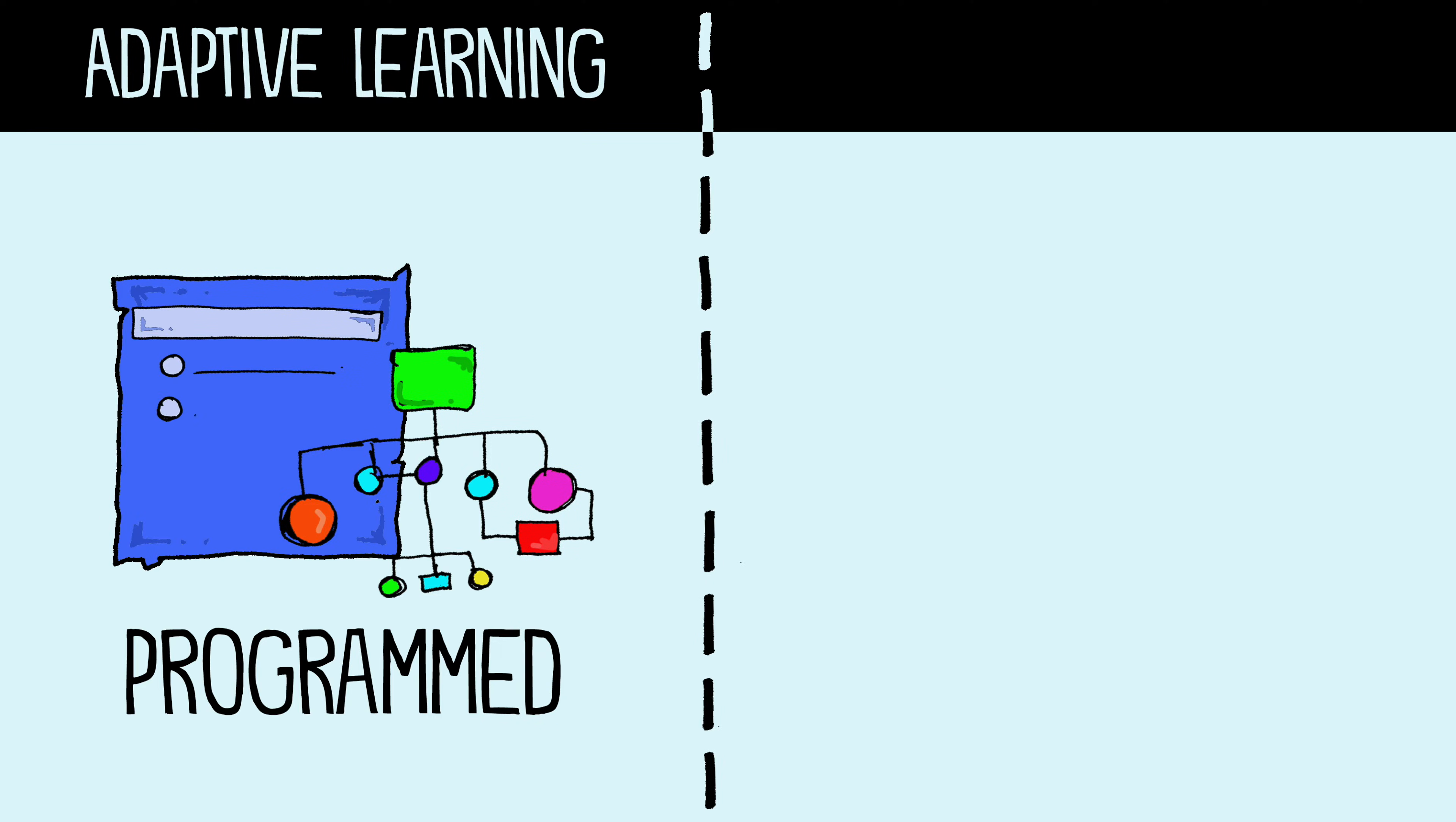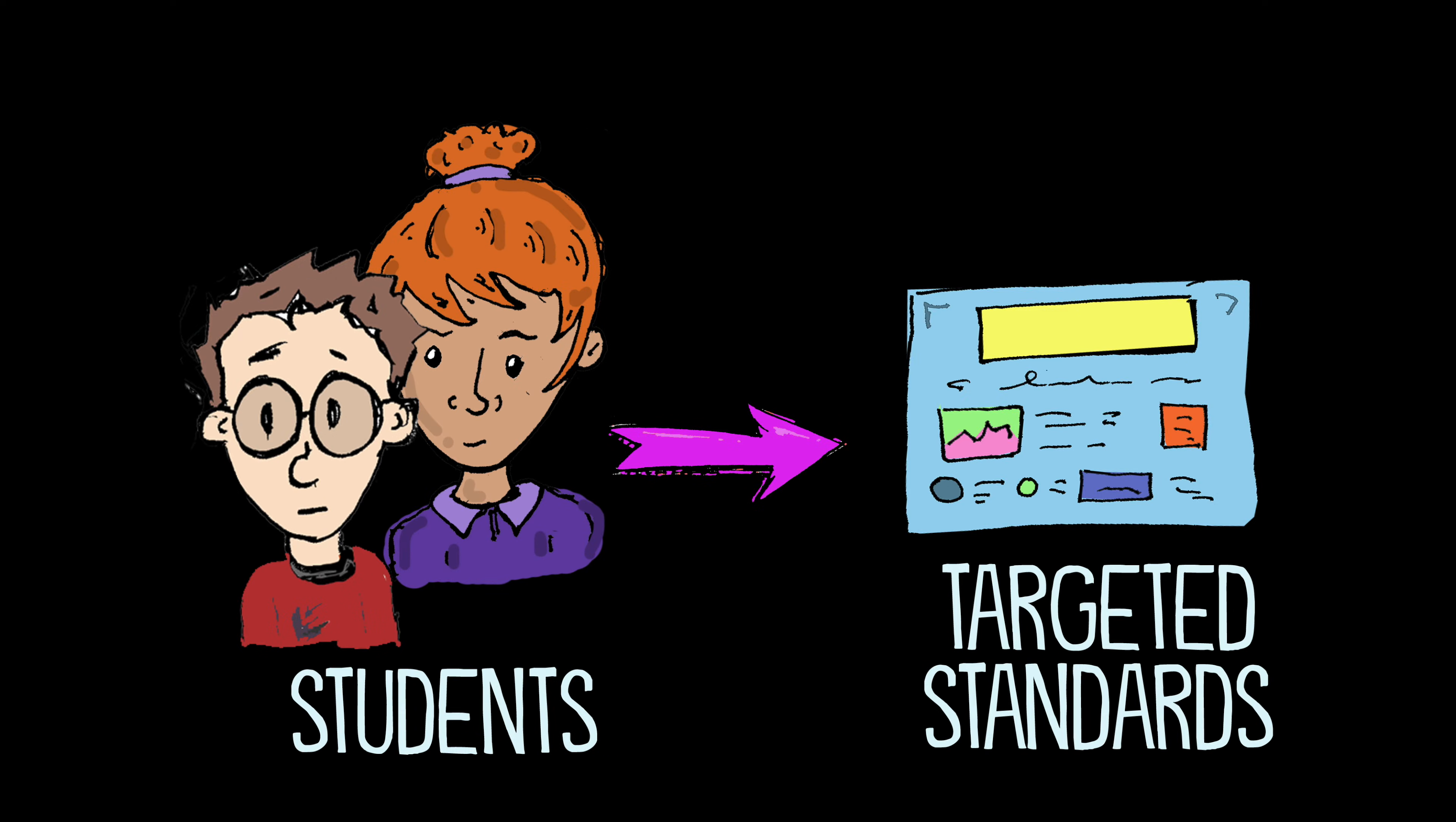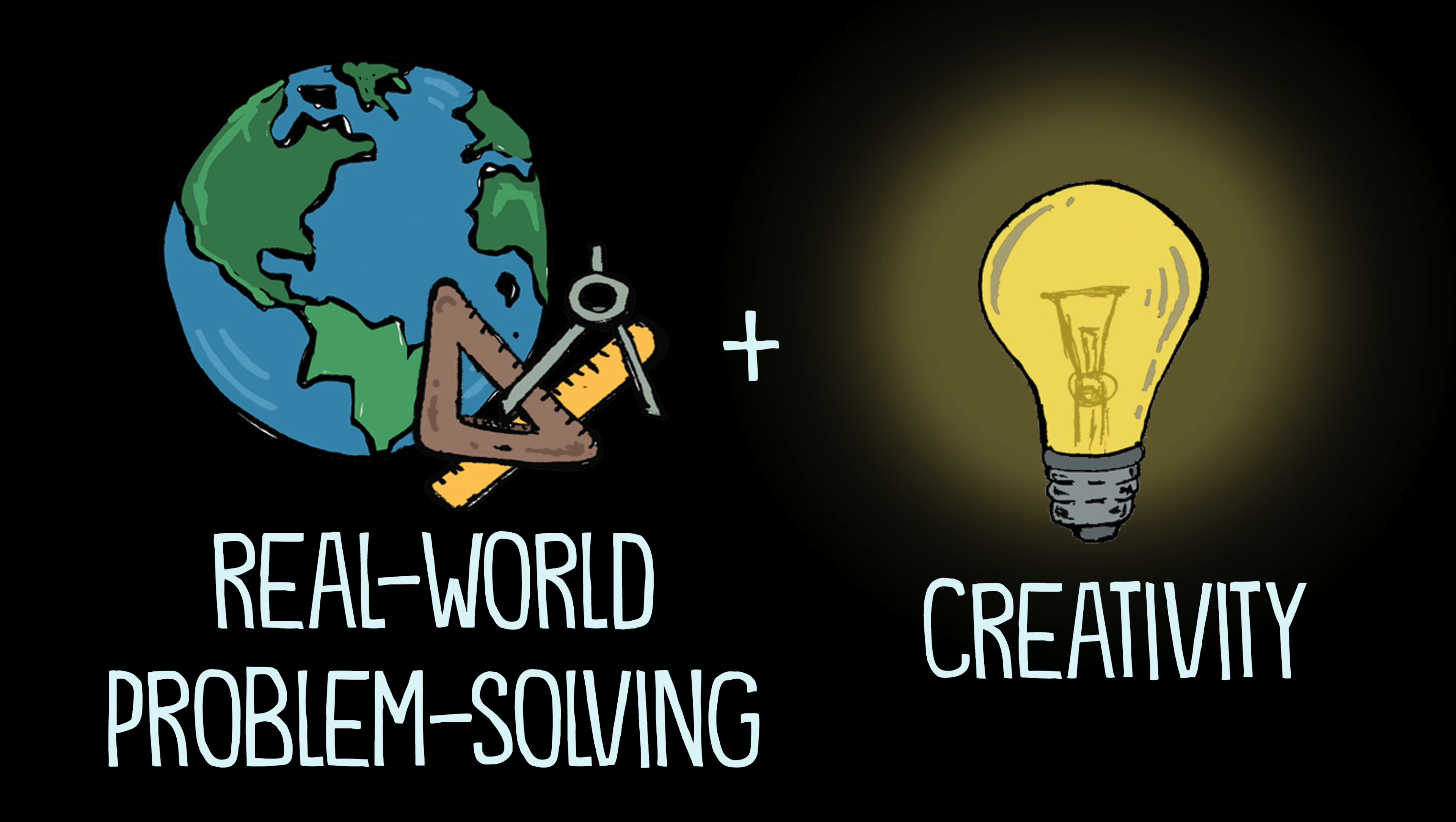In terms of learning tasks, adaptive learning tends to be more programmed as students work on targeted standards using digital worksheets. Meanwhile, personalized learning tends to be more authentic. Students engage in real-world problem solving with opportunities to do creative work.